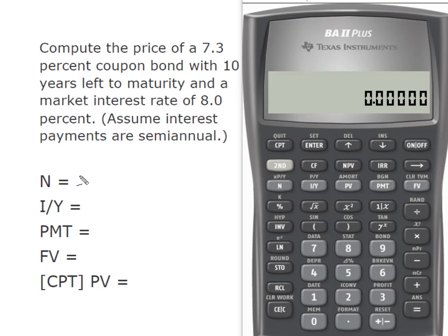So we have 10 years semi-annual, that gives me 20 more payments. The interest rate is going to be this market rate, but it's semi-annual so we cut that in two and that becomes 4%.